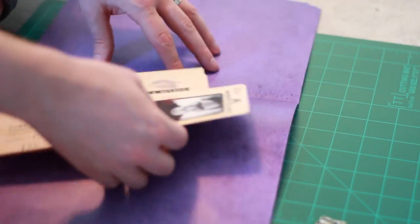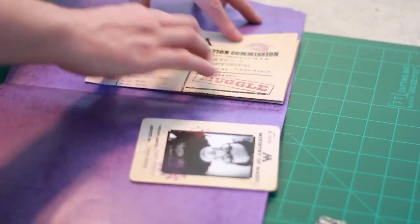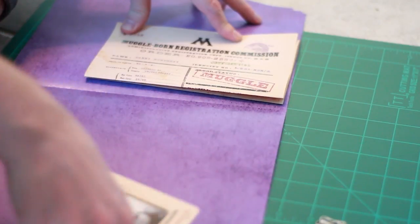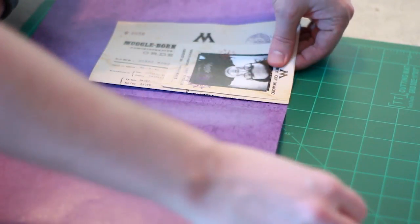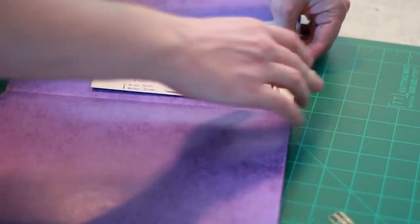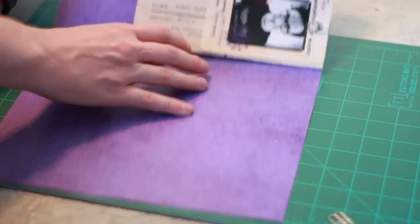So just open up your folder. We're going to take the Muggle-born registration as well as the photo ID card, and we're going to paperclip them right here on the front. So when you open it up, it should look like this.